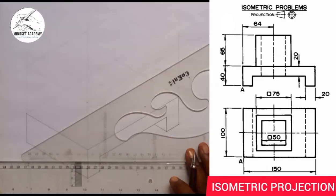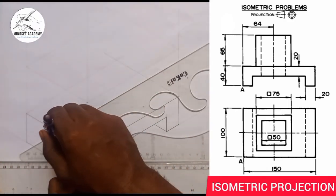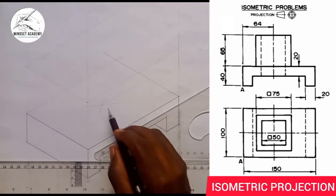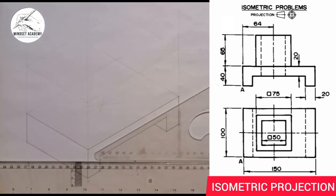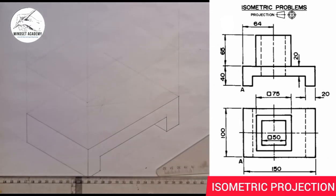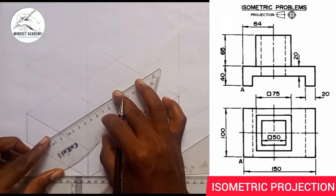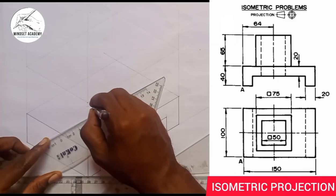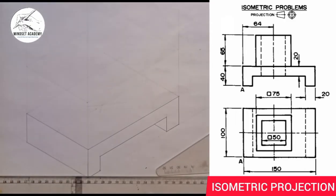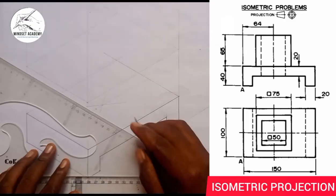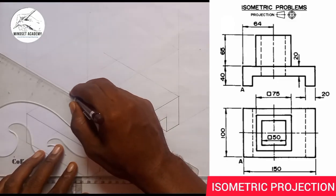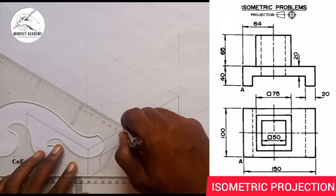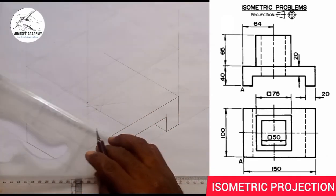I'll draw a faint line this way, then measure 64 on that line. From 0 to 64 is here, so that would be the center of that figure. I'll put it this way and draw my center line here. So this is where we are at this point.